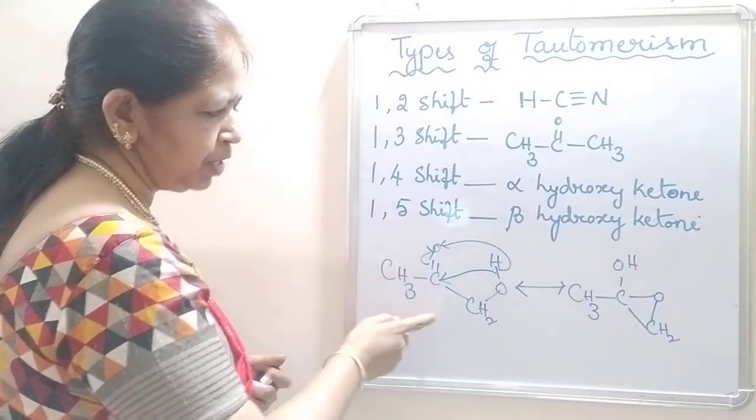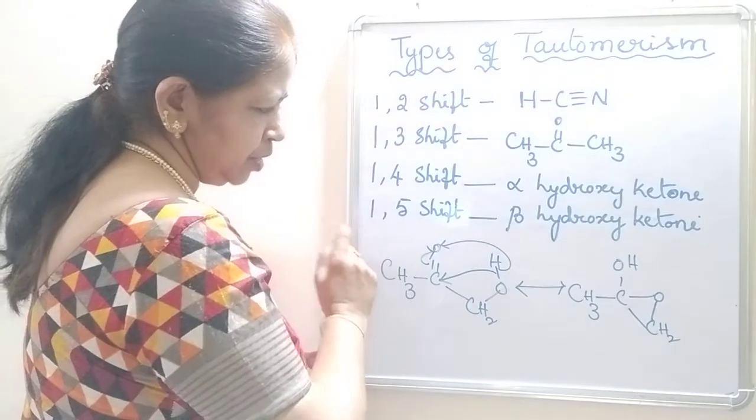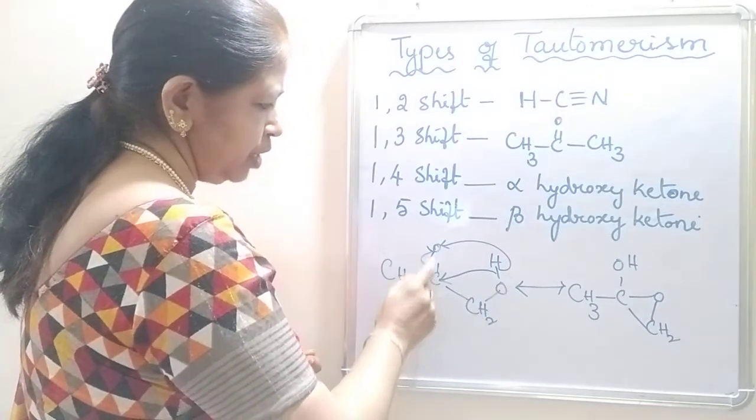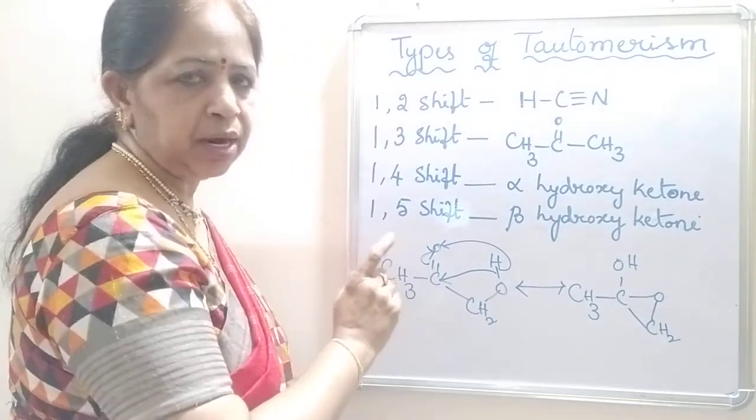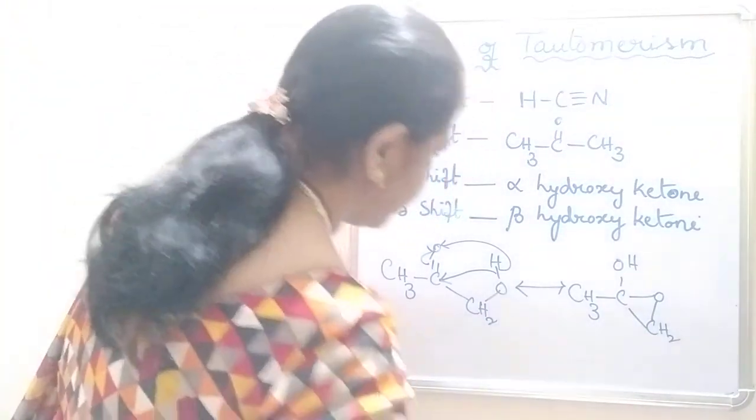What is the difference between this hydrogen and oxygen? 1-2-3-4. So it is called 1-4 shift. Now let us see 1-5 shift.